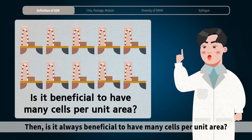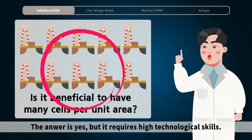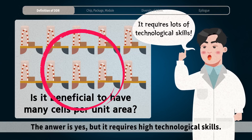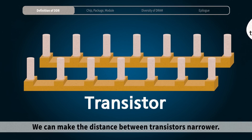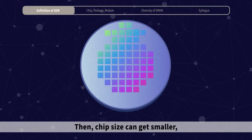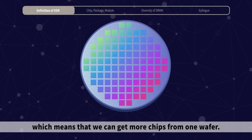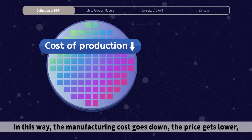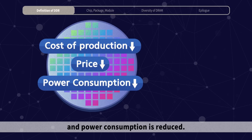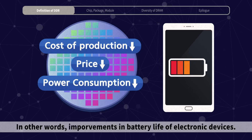Is it always beneficial to have many cells per unit area? The answer is yes, but it also requires high technological skill. We can make the distance between transistors narrower, then chip size can get smaller, which means we can get more chips from one wafer. In this way, the manufacturing cost goes down, the price gets lower, power consumption is reduced — in other words, improvements in battery life of electronic devices.